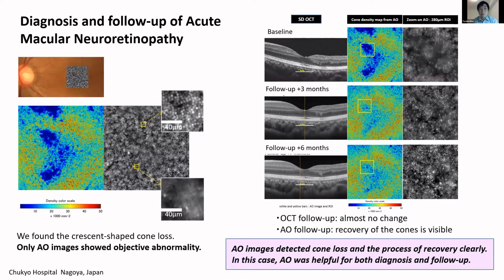In the clinical course, we followed up with the RTX1 and SD-OCT. OCT showed almost no change over the observation period, but AO images showed the recovery of cone cells clearly. Focusing on the yellow box, we can see the density of cone cells increase gradually. In conclusion, the AO image was very helpful for both diagnosis and follow-up of acute macular neuroretinopathy.